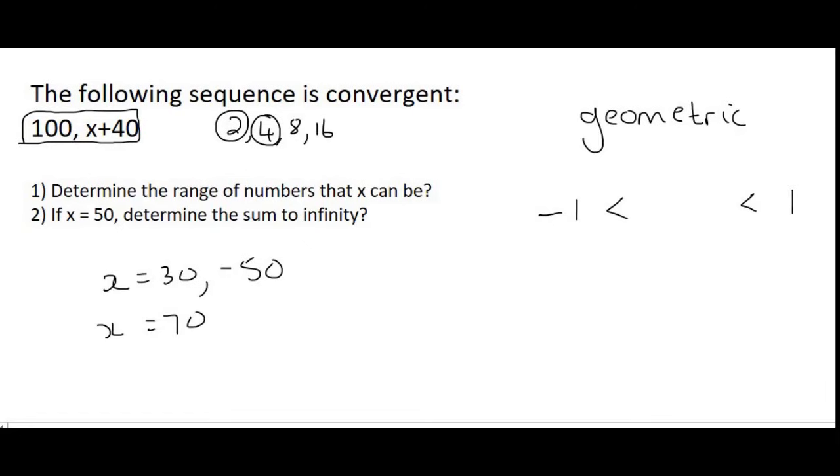Or you could say 16 divided by 8 or 8 divided by 4. As long as you choose any number on the right divided by the number to the left of it. That is how you work out the ratio.